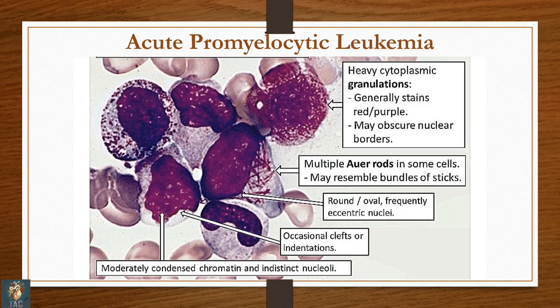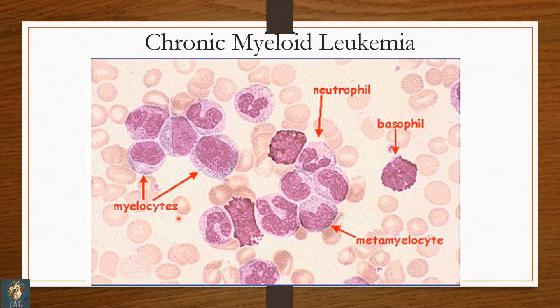Slide number one is of acute promyelocytic leukemia. You can see promyelocytes with heavy cytoplasmic granulation. You can appreciate rod-like structures in the cytoplasm. These rod-like structures are known as Auer rods, formed because of fusion of cytoplasmic granules. Whenever you see an Auer rod in any member of the white blood cell series, the diagnosis is acute myeloid leukemia.